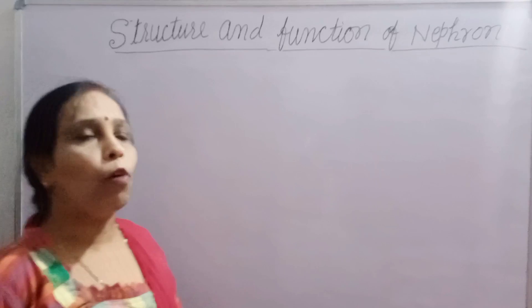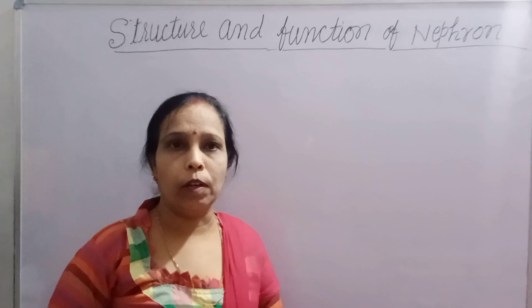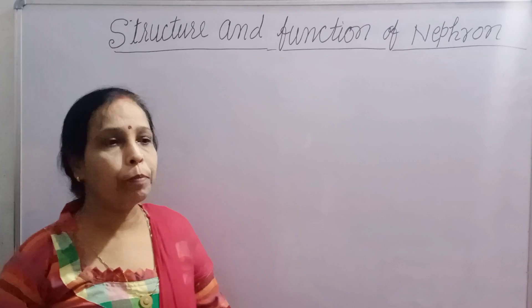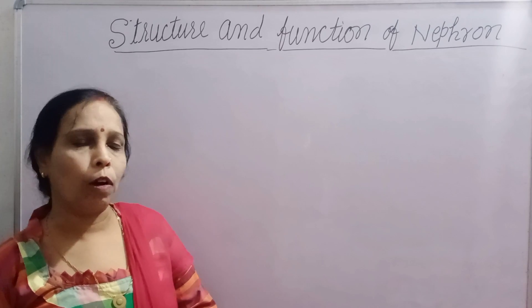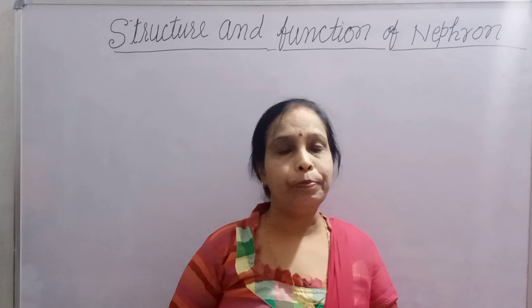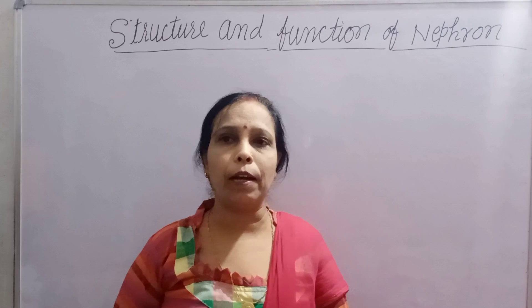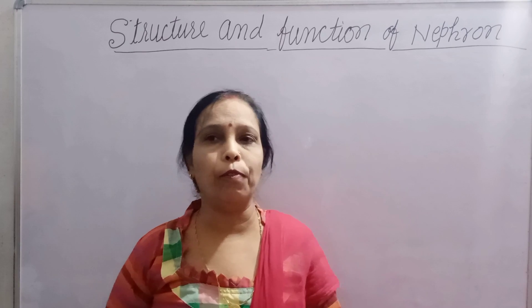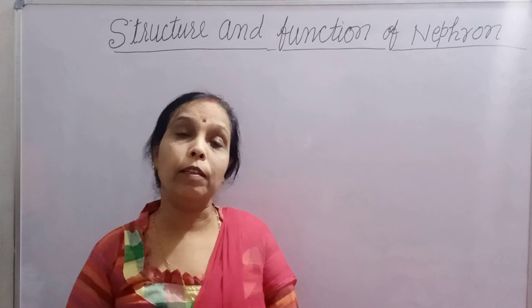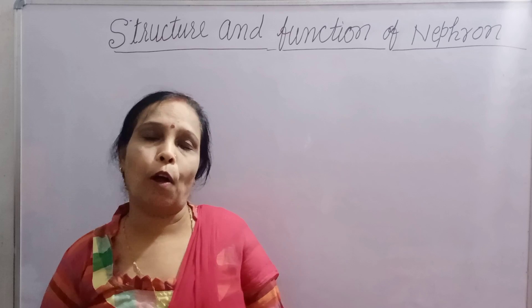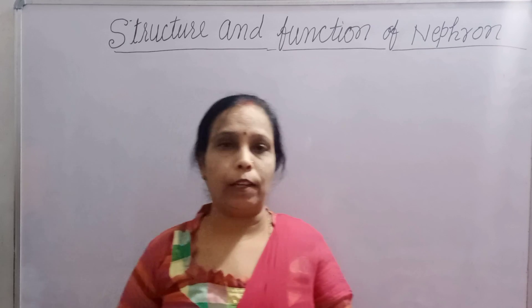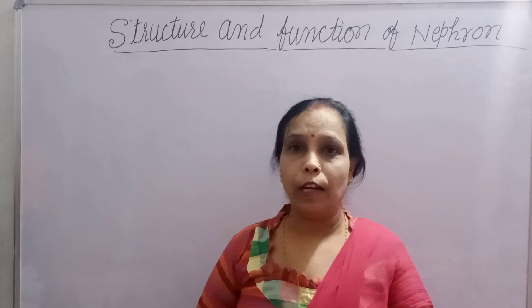There are millions of nephrons. Approximately 1 million nephrons are present in one kidney. एक kidney में कम से कम 1 million nephrons होते हैं.